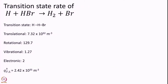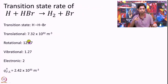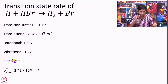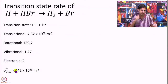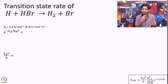We have now found all the components for the transition state: translational, rotational, vibrational (1.27), and electronic (which is simply the degeneracy = 2). Taking all of these and multiplying them together gives the total partition function for the transition state.